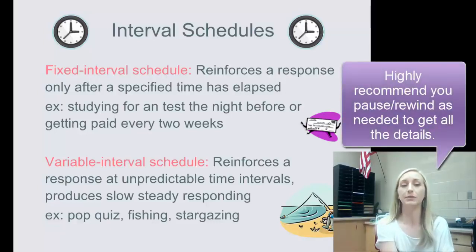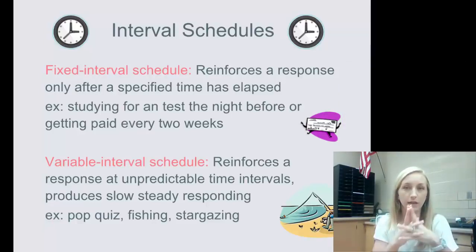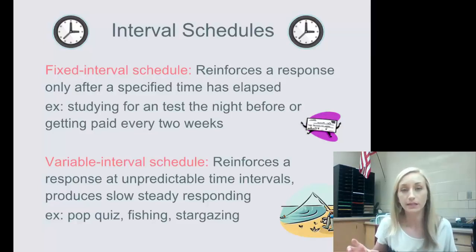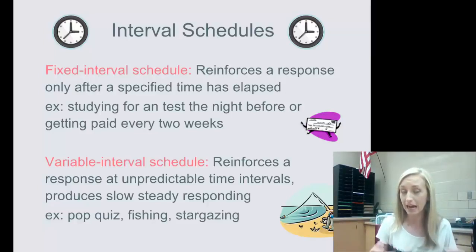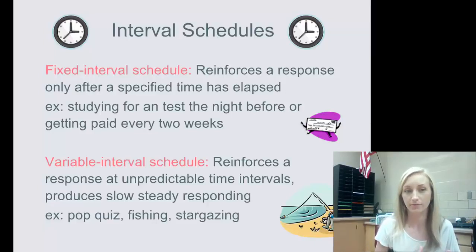Another example is getting paid every two weeks. If you work full-time — 80 hours over two weeks — you know you'll get paid at the end of that period. It's fixed because you know it's coming.